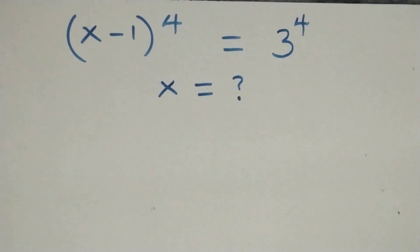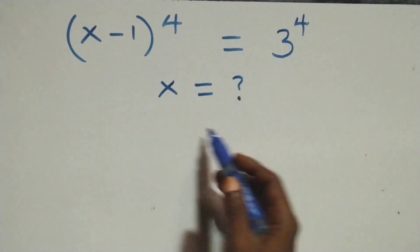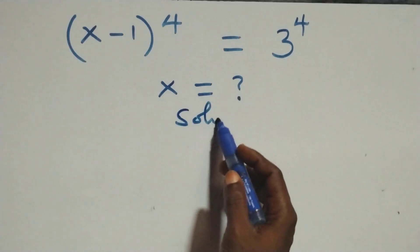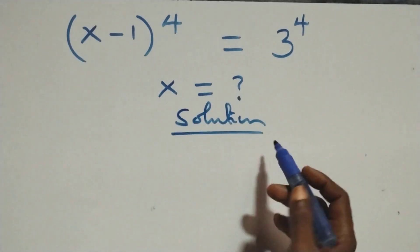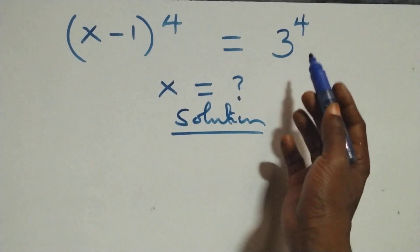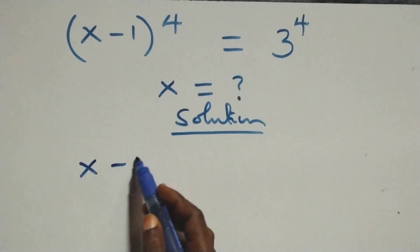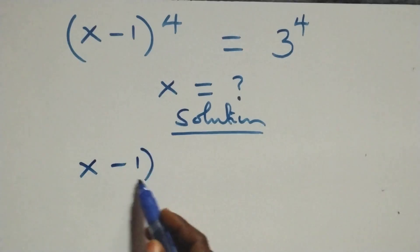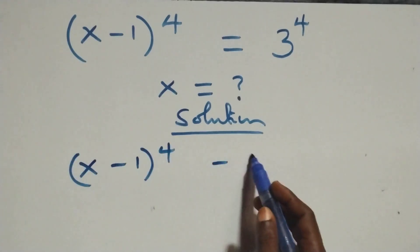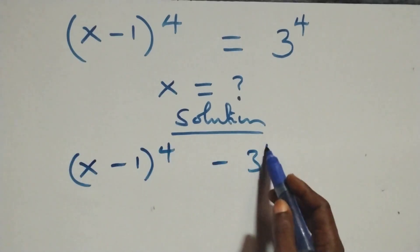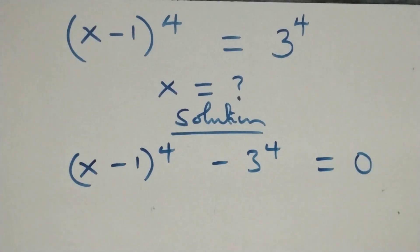Hello, you are welcome. How to solve this nice exponential equation. We take 3 raised to the power 4 to the left-hand side, giving us x minus 1 raised to the power 4 minus 3 raised to the power 4 equals 0.